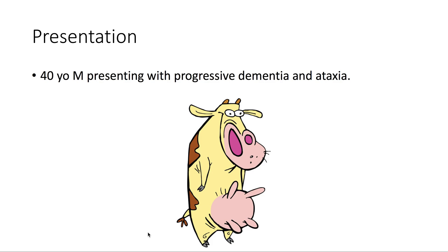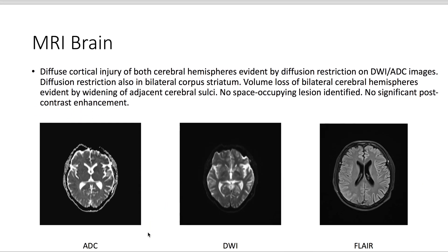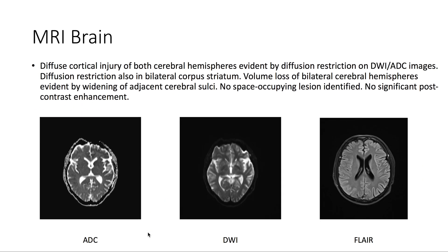For the presentation, we have a 40-year-old male presenting with progressive dementia and ataxia. Taking a look at the MRI of the brain, there is diffuse cortical injury of both cerebral hemispheres, evident by diffusion restriction on ADC and DWI imaging.